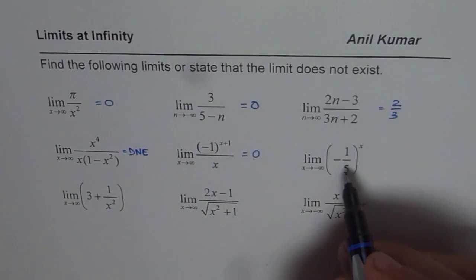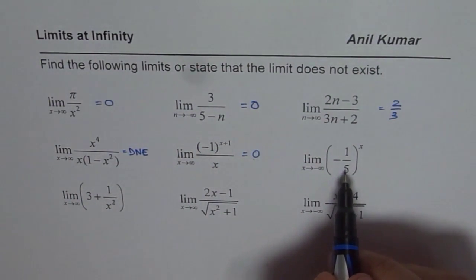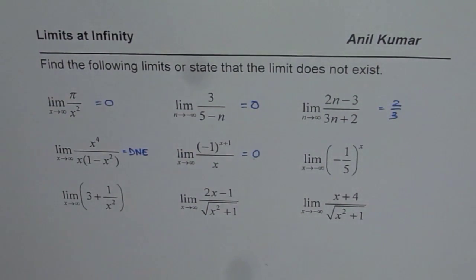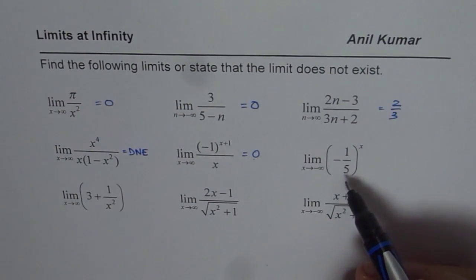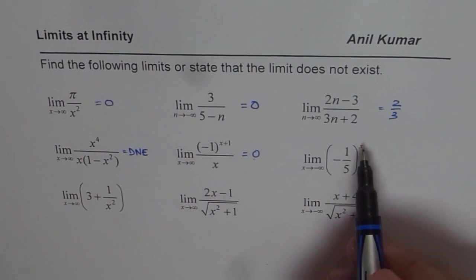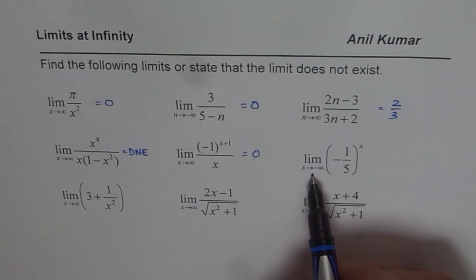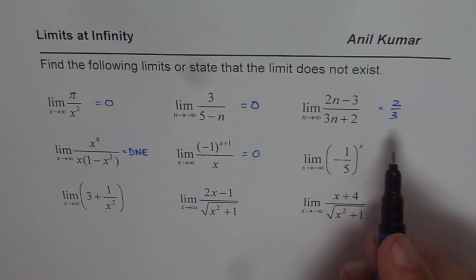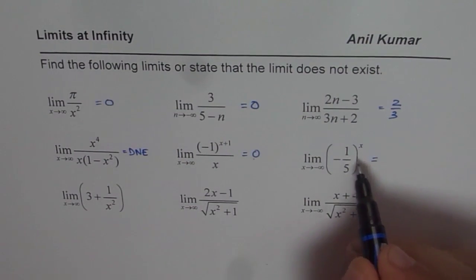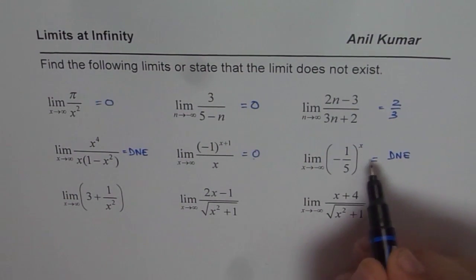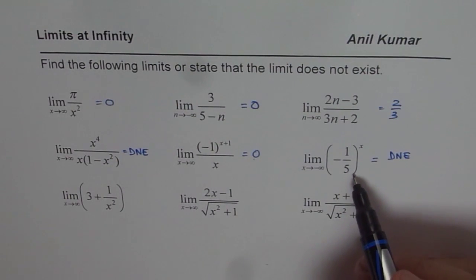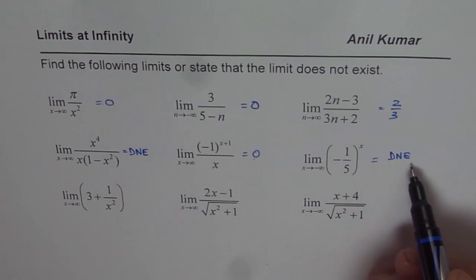In this case we are approaching negative infinity. The value is negative 1 over 5 to the power of x. Now 1 over 5 is raised to the exponent x. If the exponent is approaching negative infinity — a very large magnitude — then the expression is approaching a very large value. Since it is not approaching a fixed value, the limit does not exist. It could be negative or positive, but it does not matter; it is not approaching a fixed value, and therefore the limit does not exist.